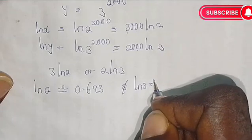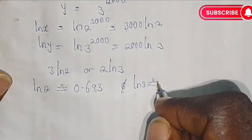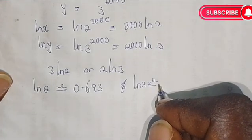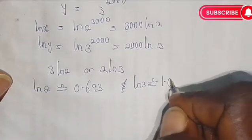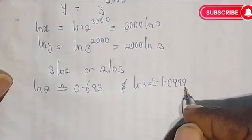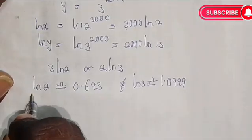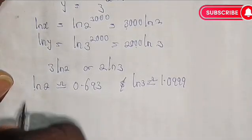The natural log of 3 is approximately 1.0999.